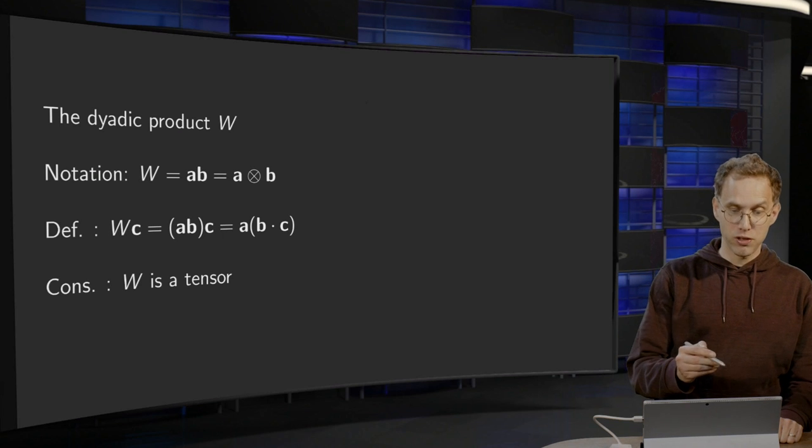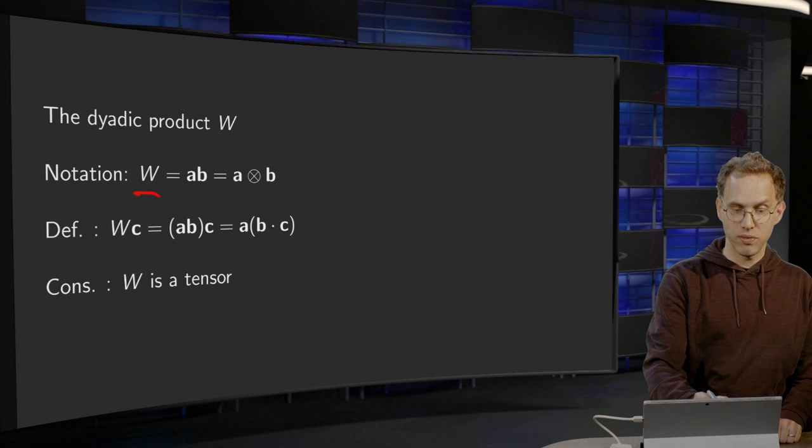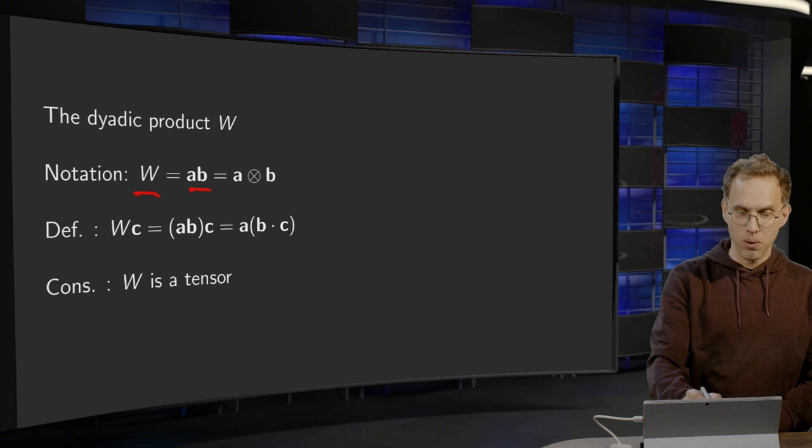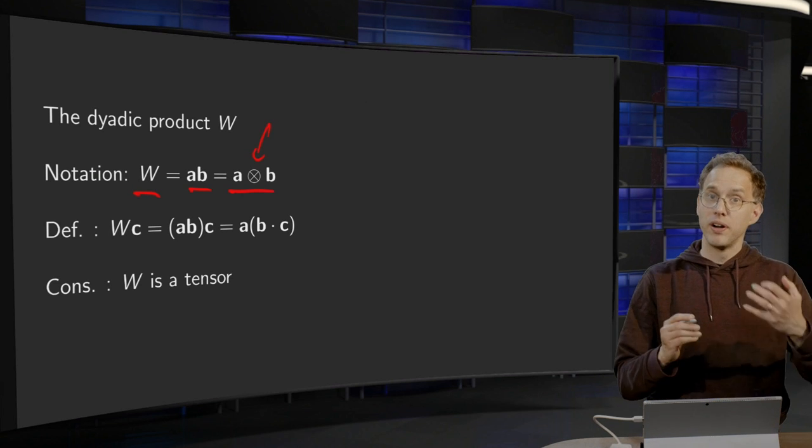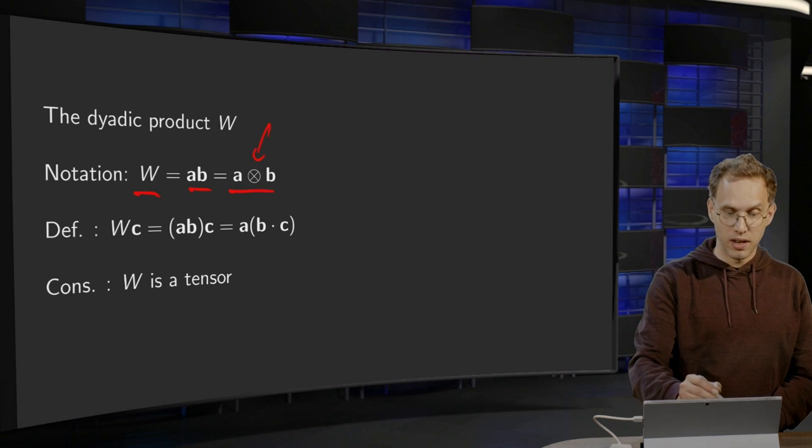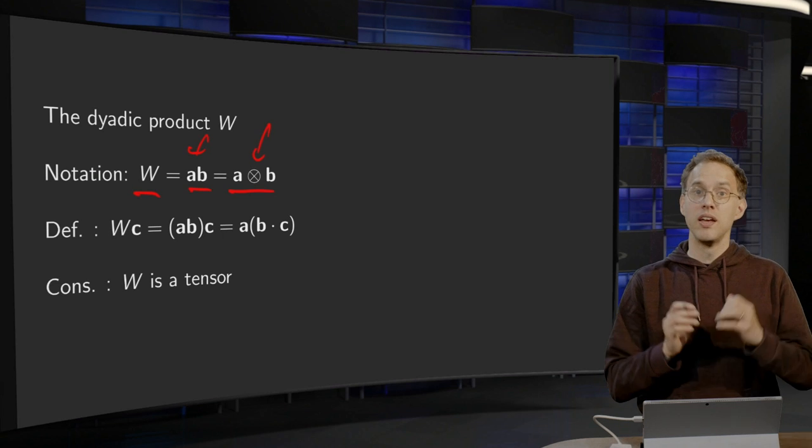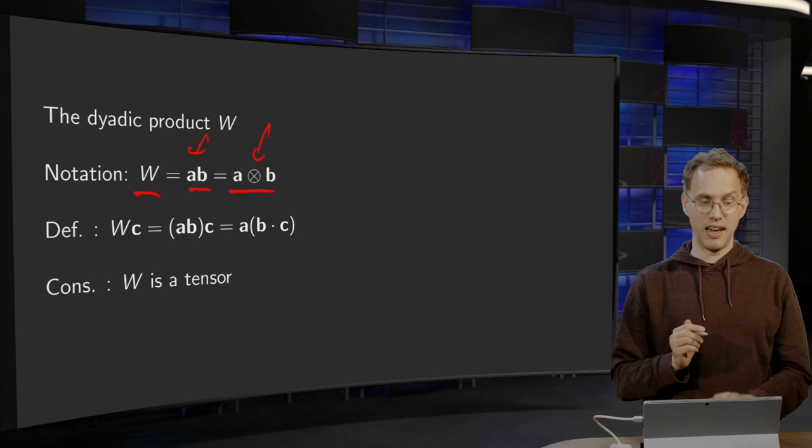First on notation, we will call W the dyadic product that we denote as AB, just next to each other, or A with this symbol over here. Well, in the book I am using they use a notation like this, so I will stick to that in this video. So, that is the notation. How do you compute a dyadic product?